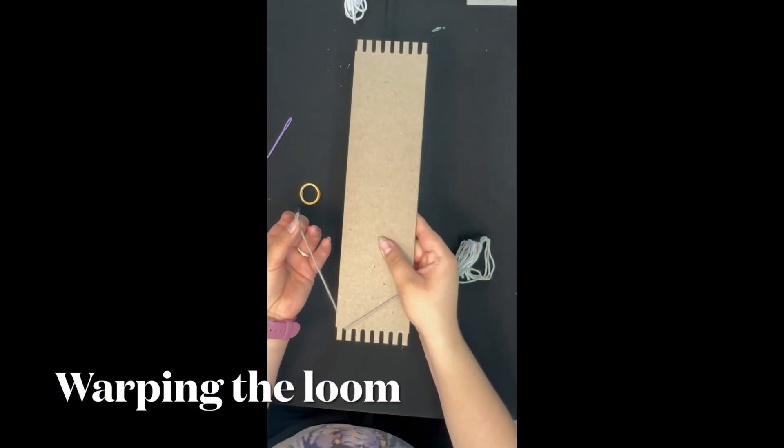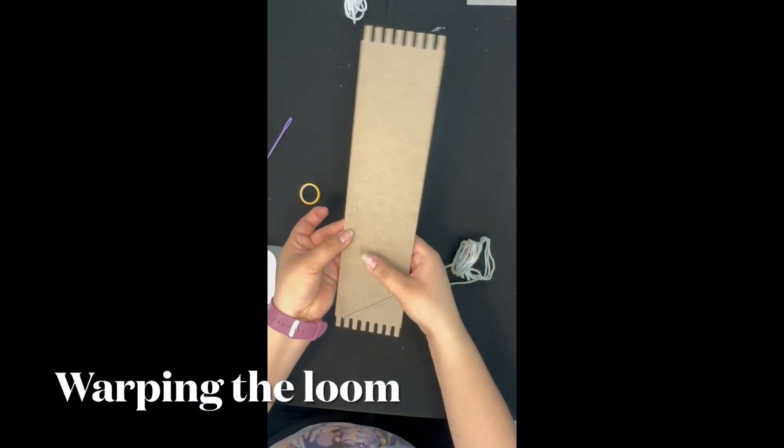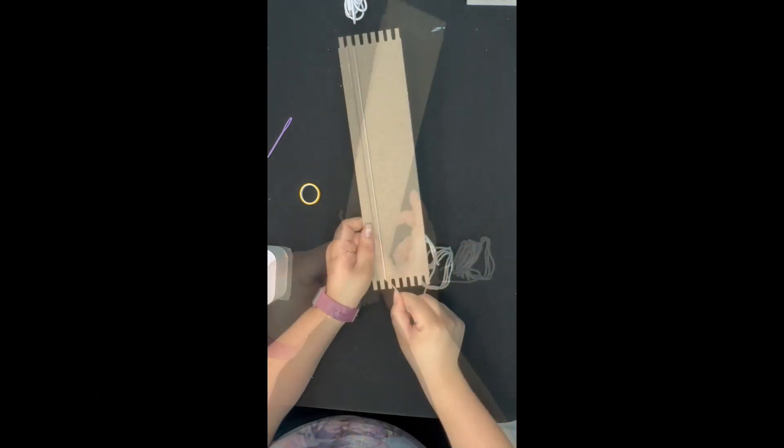The first step is warping your loom. Make sure that you leave one to two inches of excess yarn and tape it to the back.